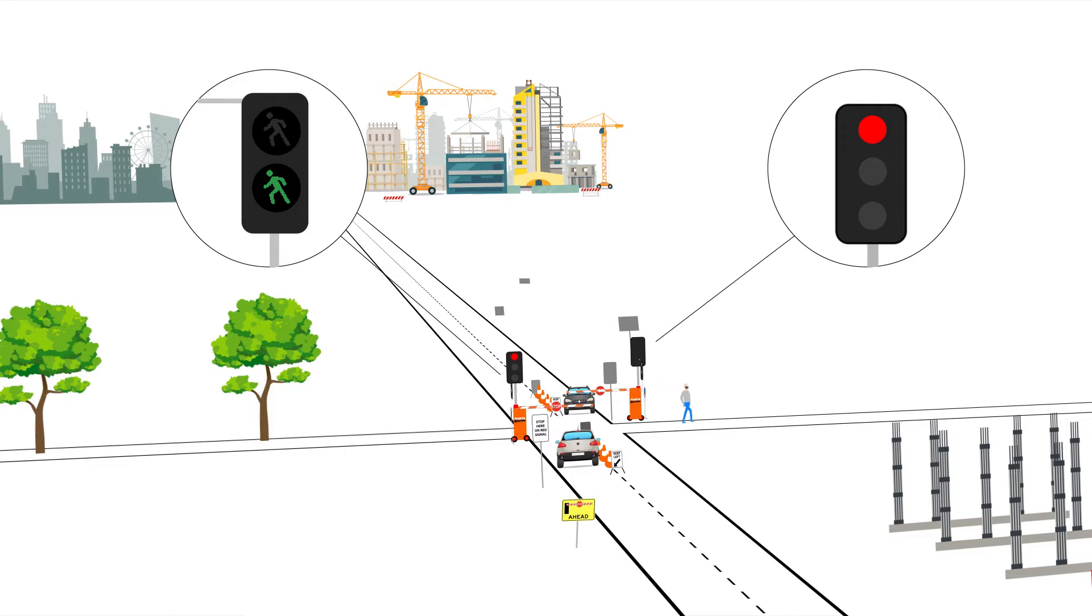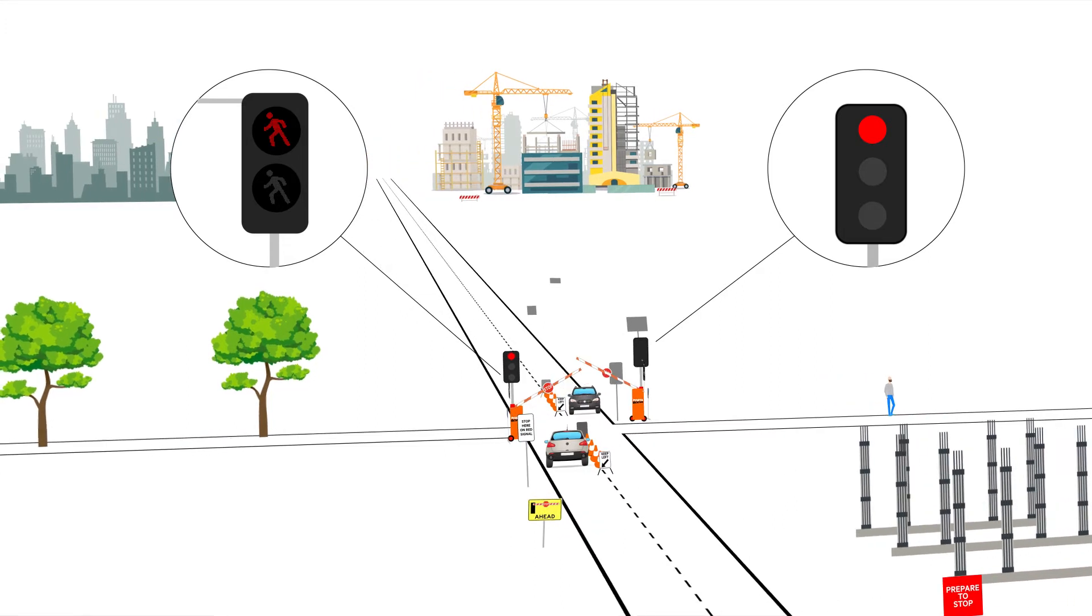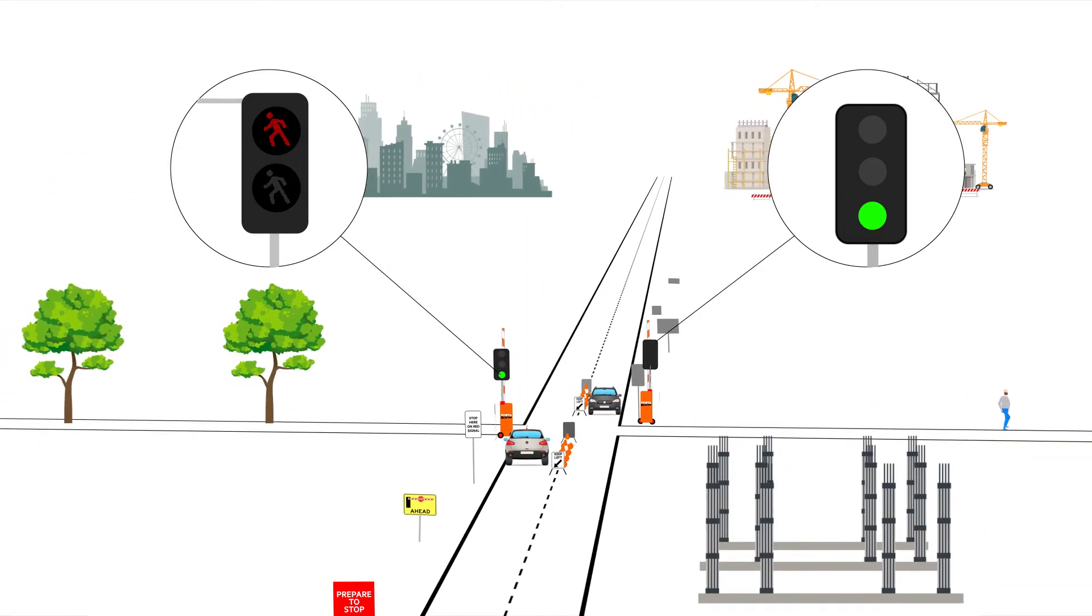When the pedestrian crossing phase is finished, the pedestrian lights will flash red, then turn solid red. The traffic lights turn from red to green, and the Portaboom arm raises to the vertical position.